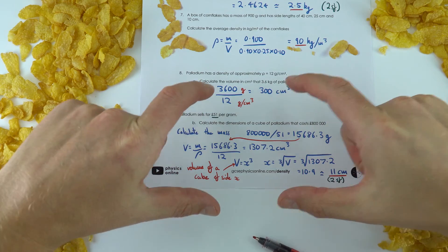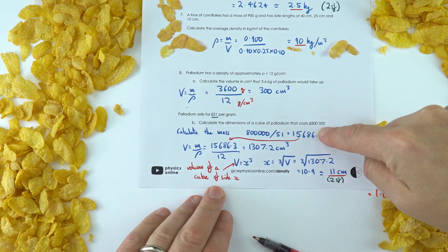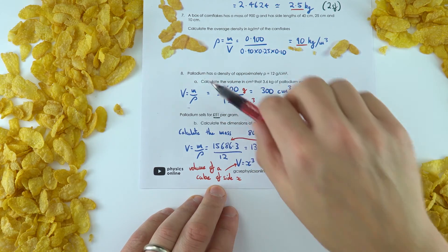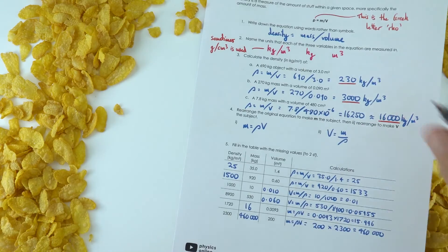Now that is small. That is a cube that's kind of like this big, and that would be worth 800,000 pounds, because palladium is quite a rare mineral. So those were some questions about density.